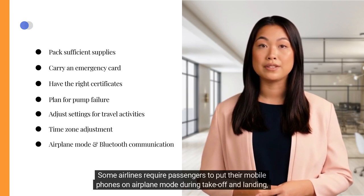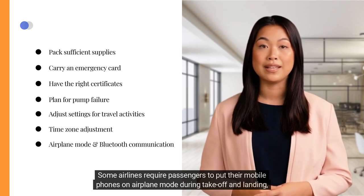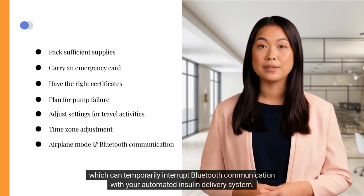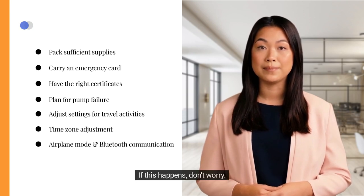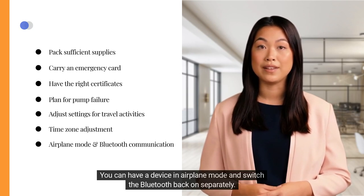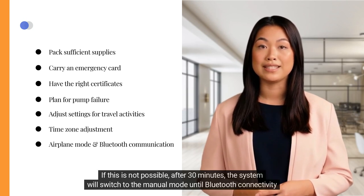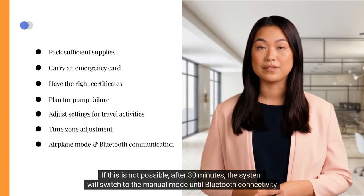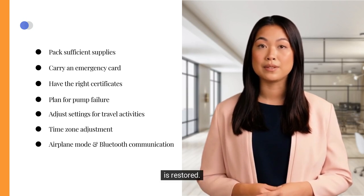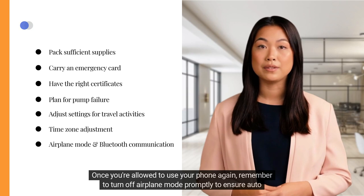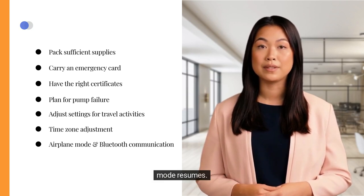Some airlines require passengers to put their mobile phones on airplane mode during takeoff and landing, which can temporarily interrupt Bluetooth communication with your automated insulin delivery system. If this happens, don't worry — you can have a device in airplane mode and switch the Bluetooth back on separately. If this is not possible, after 30 minutes, the system will switch to manual mode until Bluetooth connectivity is restored. Once you're allowed to use your phone again, turn off airplane mode promptly to ensure auto mode resumes.